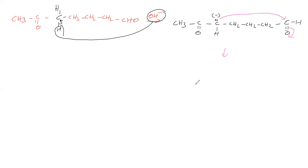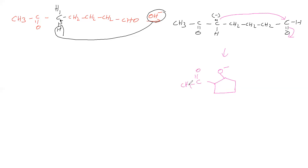So what membered ring will we get? One, two, three, four, five — we are getting a five-membered ring. The O⁻ is produced. The ring has: first carbon, second carbon, third carbon, fourth carbon, fifth carbon — the fifth carbon is having COCH₃. This O⁻ takes H⁺ from water and becomes OH.